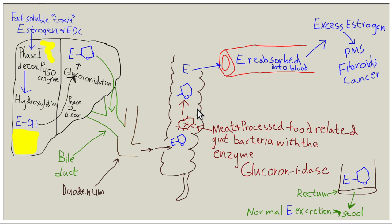Bad gut bacteria — what you get from eating meat and processed food — have not been living in human colons for long, so they are not symbiotic with us. One problem with these bacteria is they have more of an enzyme called glucuronidase. This enzyme cuts the bond between the glucuronic acid and the estrogen. Once separated, the estrogen is reabsorbed back into the blood. So a person who eats a lot of processed food and meat will have more of this glucuronidase enzyme, reabsorb their estrogen, and end up with higher estrogen levels.